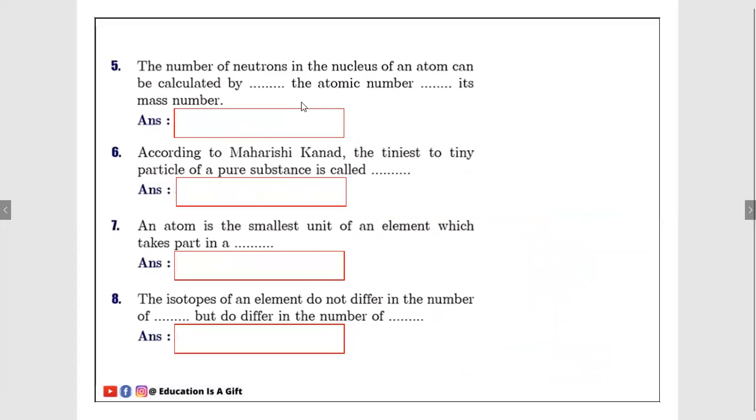Number five: The number of neutrons in the nucleus of an atom can be calculated by dash the atomic number, dash its mass number. So the number of neutrons, if you take X here, this is atomic number, this is mass number, and the number of neutrons.